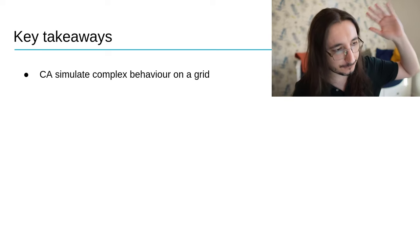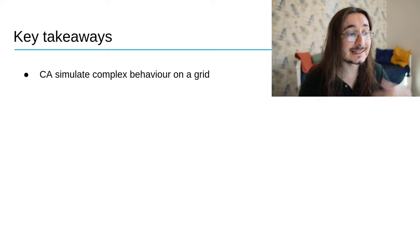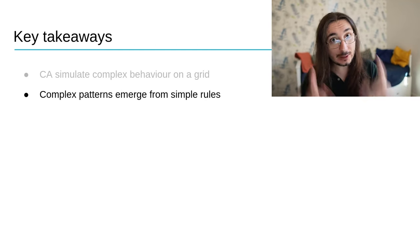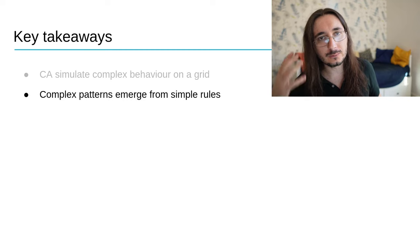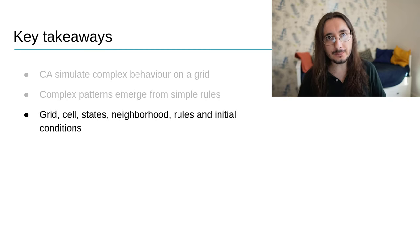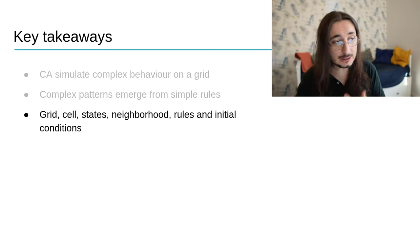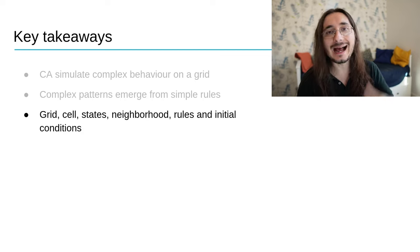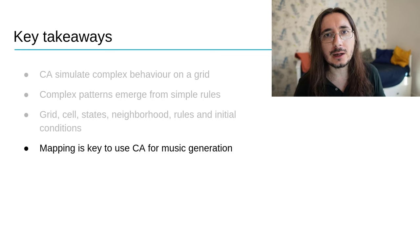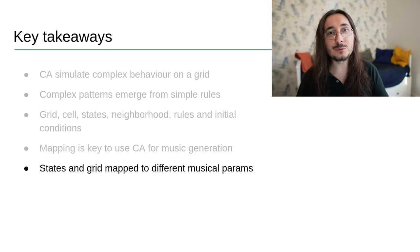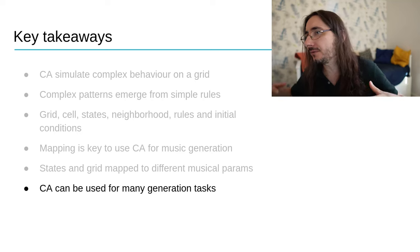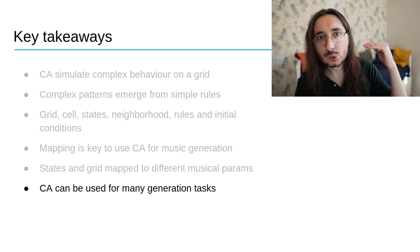Let's wrap up this lecture by going through the most important points. First, cellular automata simulate complex behavior on a grid. The great thing about them is that you can use simple rules and get very complex patterns, and that's the typical behavior of all complex systems. In order to formalize them, we need a bunch of different components, that is the grid, the cell, the states, the neighborhood, rules, and the initial conditions. In order to use cellular automata for music generation, the key thing is finding right mapping. Mappings that work well with whatever our task currently is. It's possible to map states and grid to a lot of different musical parameters. This flexibility allows us to generate all sorts of musical constructs from chords to melody to rhythmic patterns.